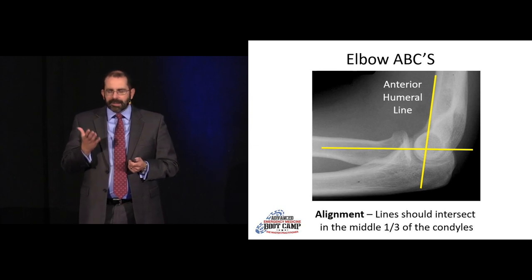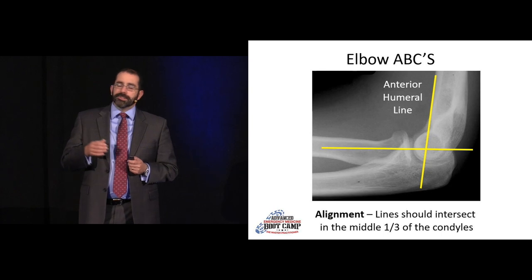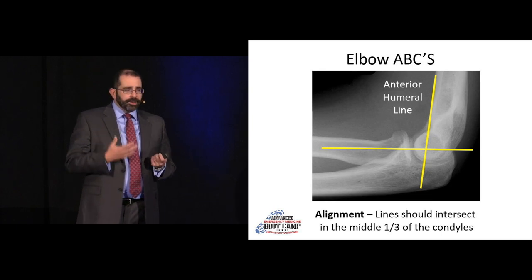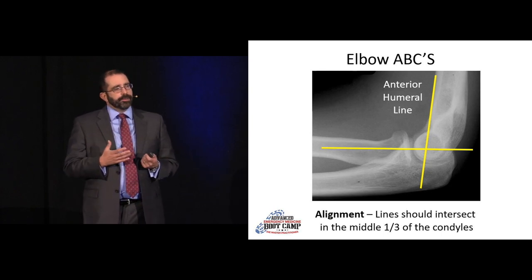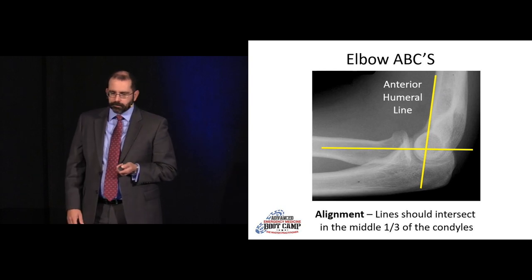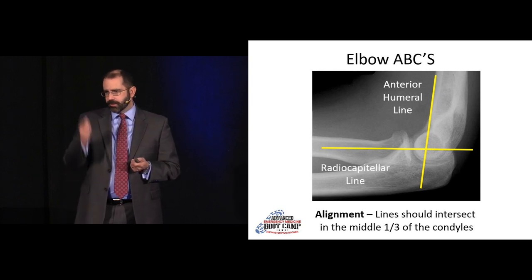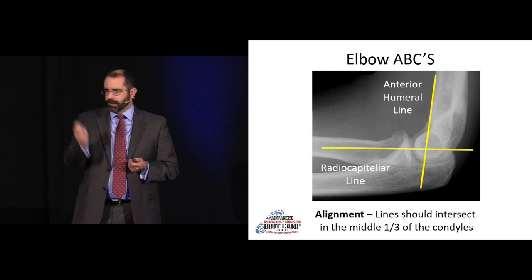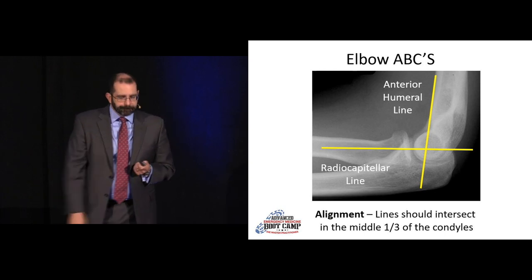We look at the anterior humeral line, which should intersect the middle third of the capitellum, and the radial capitellar line, which should also intersect the middle third of the capitellum. In adults you'll most often see supracondylar or intracondylar fractures, but radial head dislocations can be very subtle — that's where the radial capitellar line comes in. I usually just take a piece of paper to the monitor and draw the line — it takes two seconds, so get in the habit.